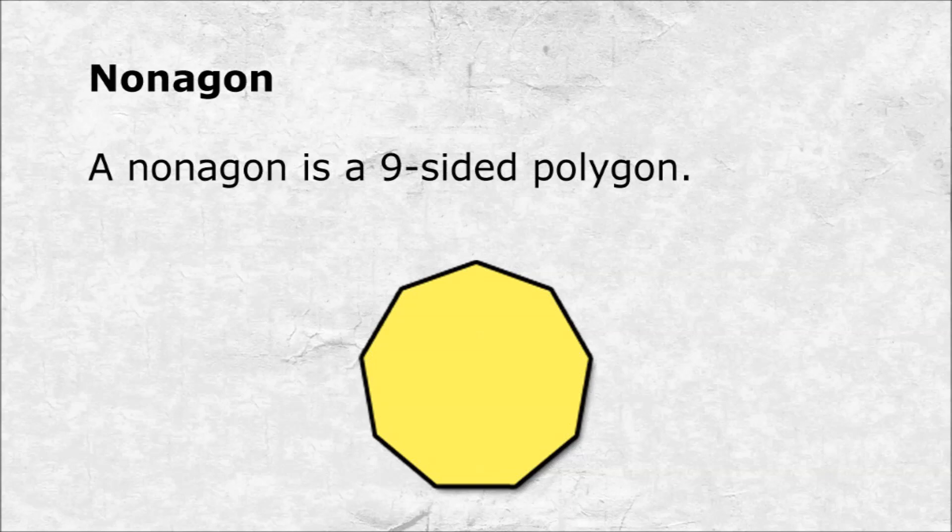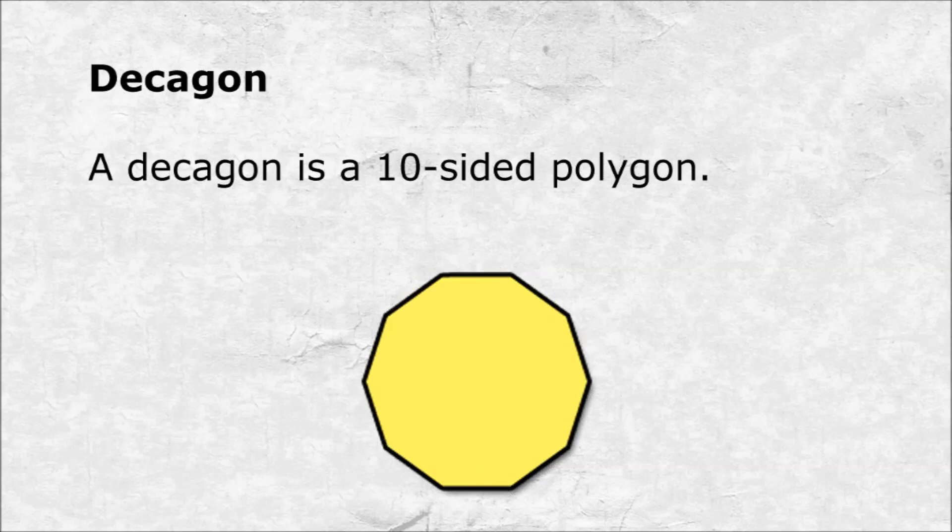Nonagon. A nonagon is a nine-sided polygon. Decagon. A decagon is a ten-sided polygon.